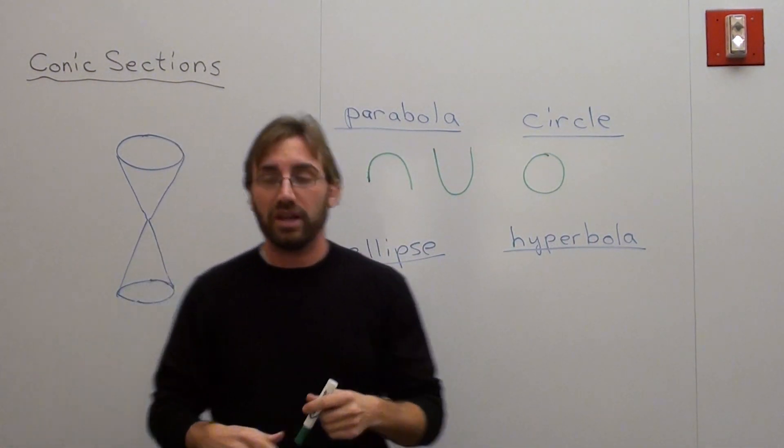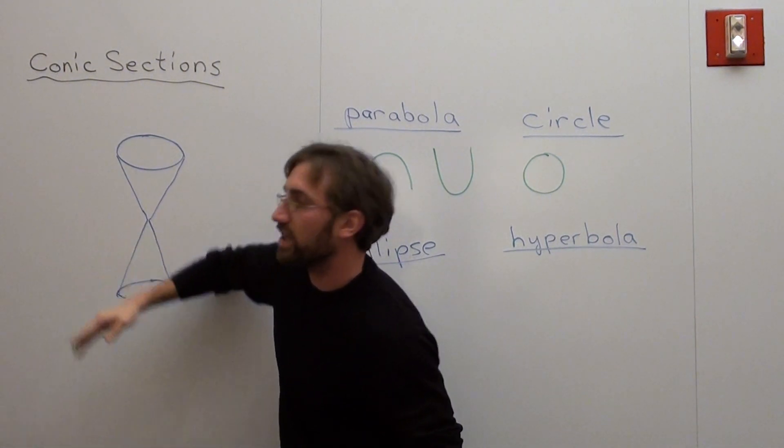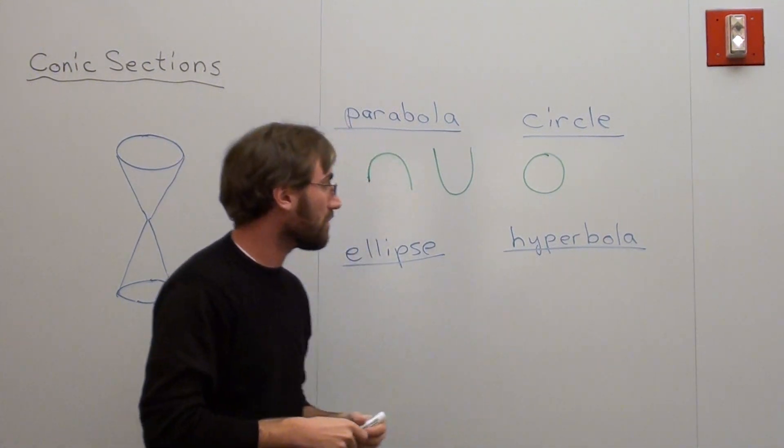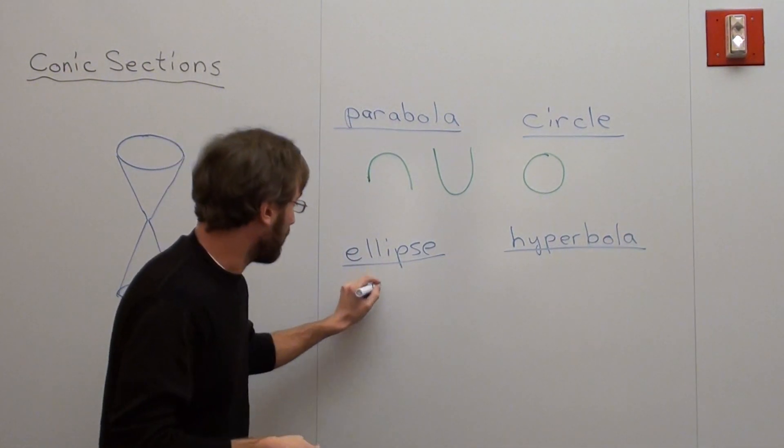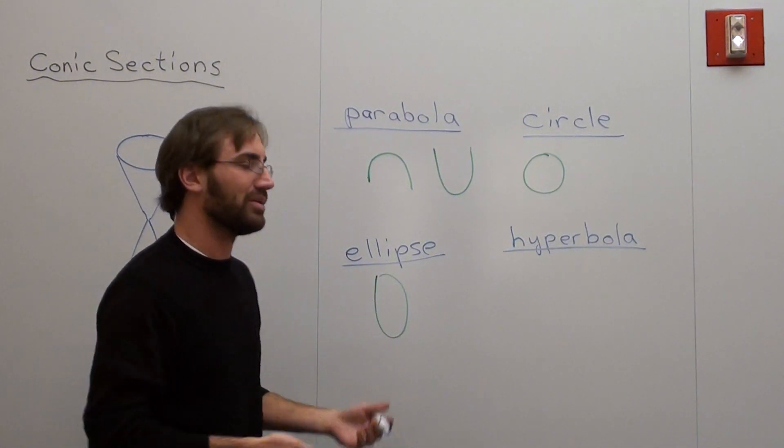If I do the same thing, cutting straight through, but I do it at a slant, and it goes through one side to the other, it doesn't form a circle. It forms a circular shape, but not a perfect circle. What that is, is an ellipse. Some people say that's an oval. It's an ellipse.